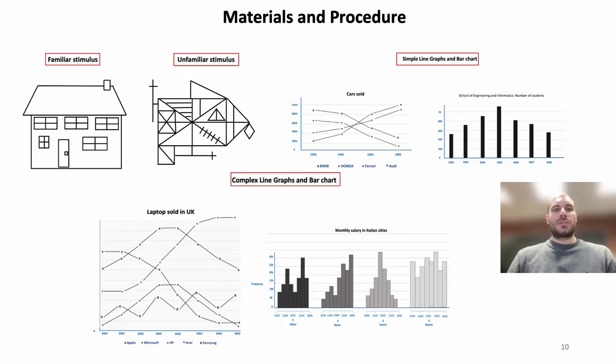These are the stimuli we used for our experiment: a house, which is a familiar stimulus for everyone; a ray figure, which is an unfamiliar stimulus; one simple line graph; one simple bar chart; one complex line graph; and one complex bar chart.